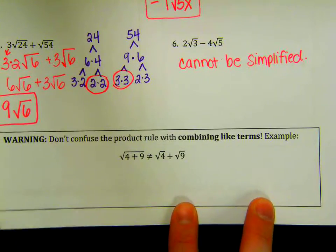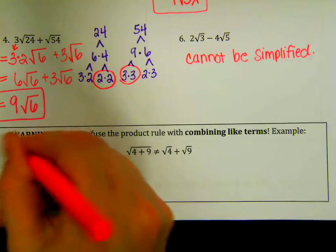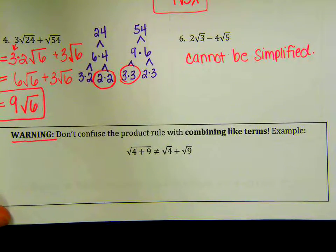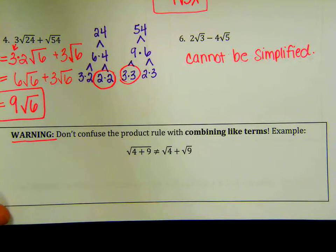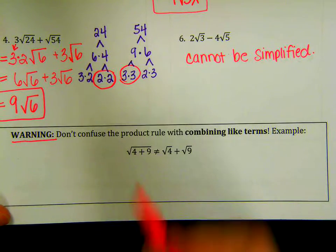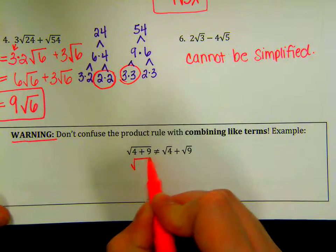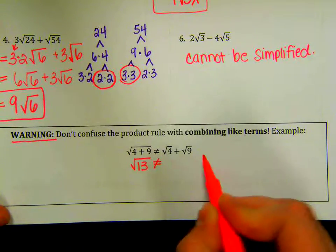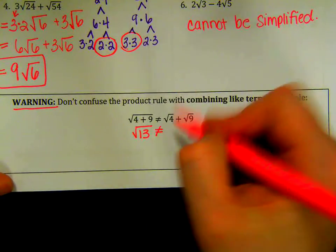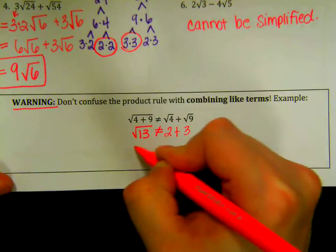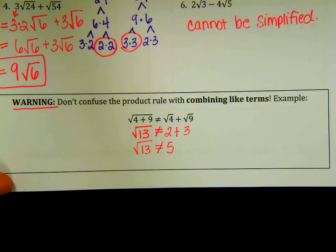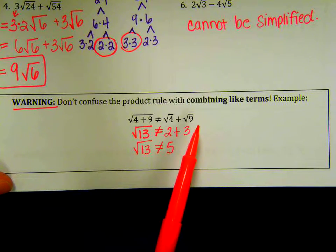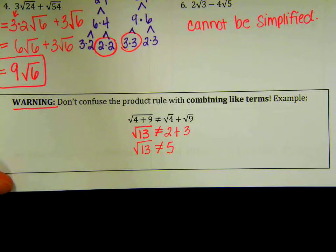Before flipping over to the next page, I do want to make sure that you highlight this warning. Do not confuse the product rule with combining like terms. So if you have these two things here, you can't just add 4 plus 9 and call it a day. It's not going to work. Because if you do this one, 4 plus 9 is the square root of 13. But that doesn't equal this side because what's the square root of 4? 2. What's the square root of 9? 3. So this would be saying square root of 13 equals 5 and that's not the case.